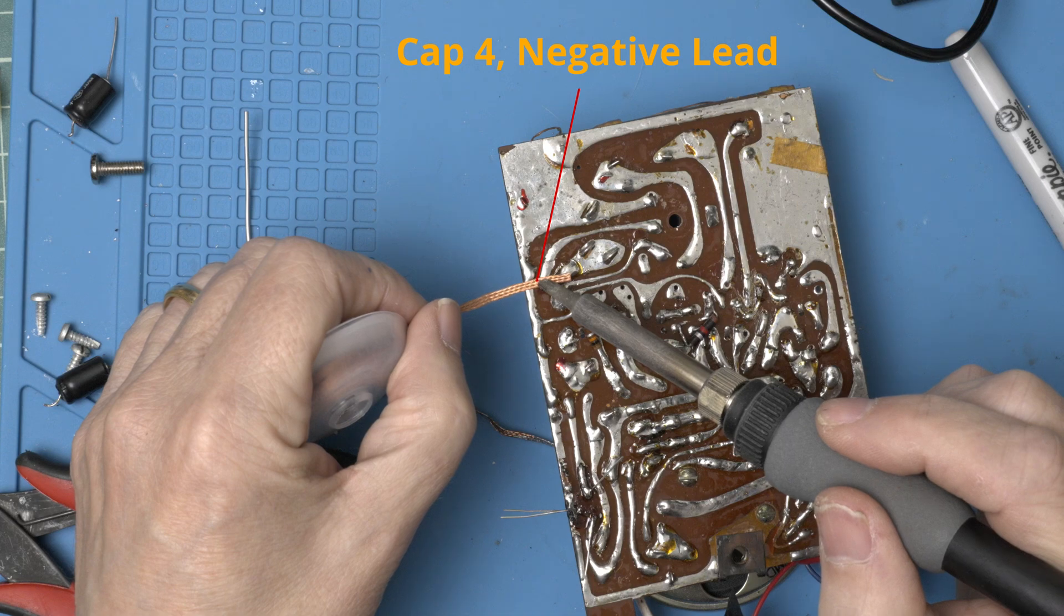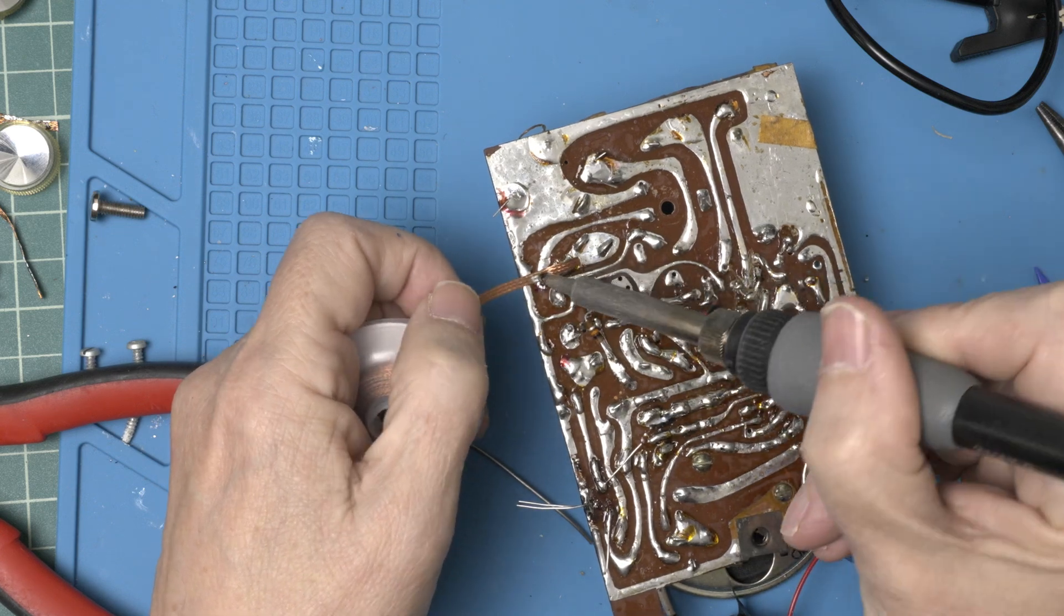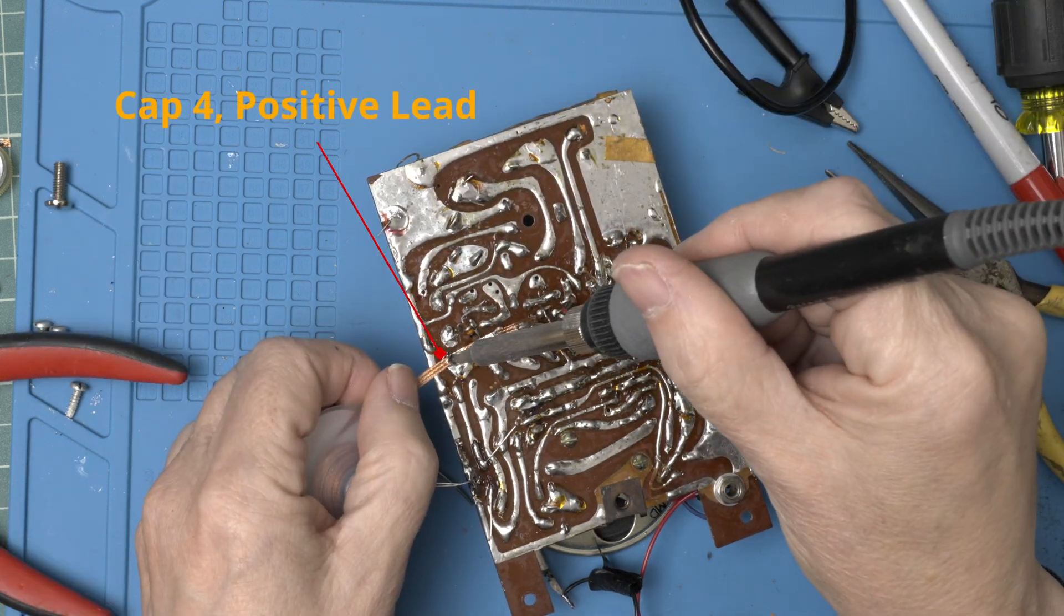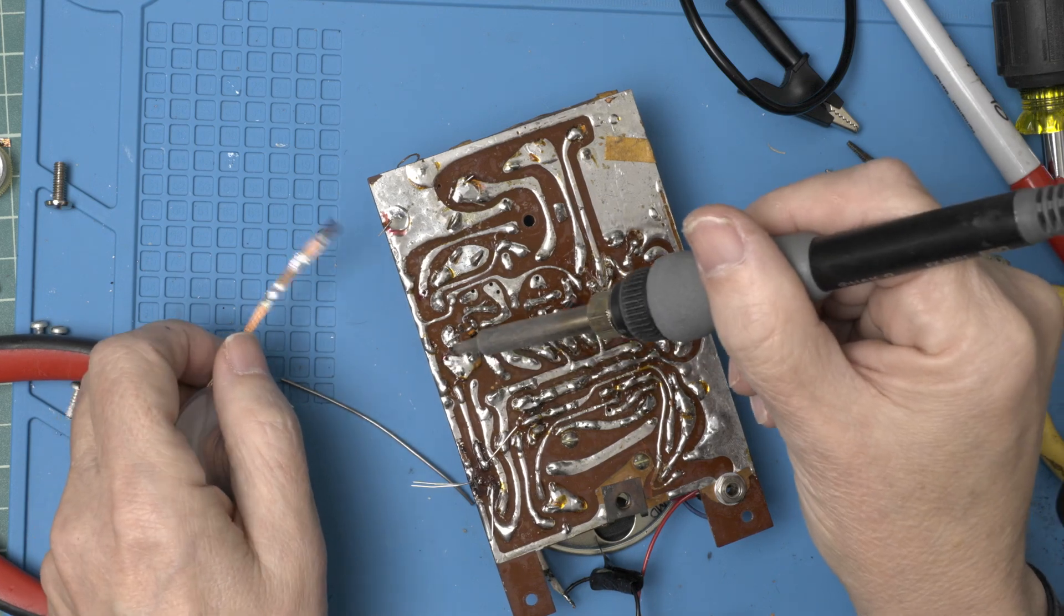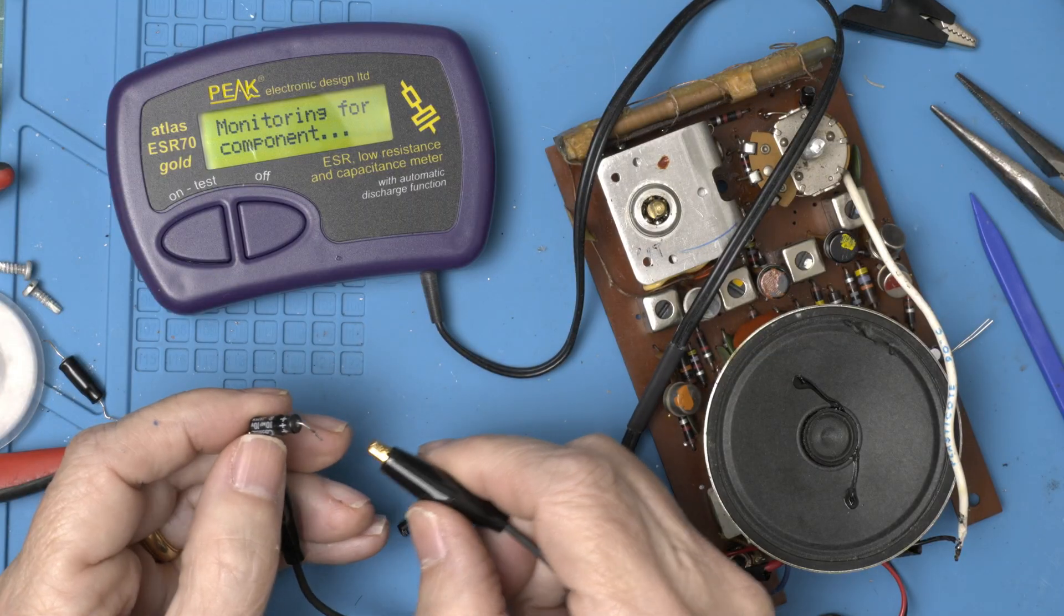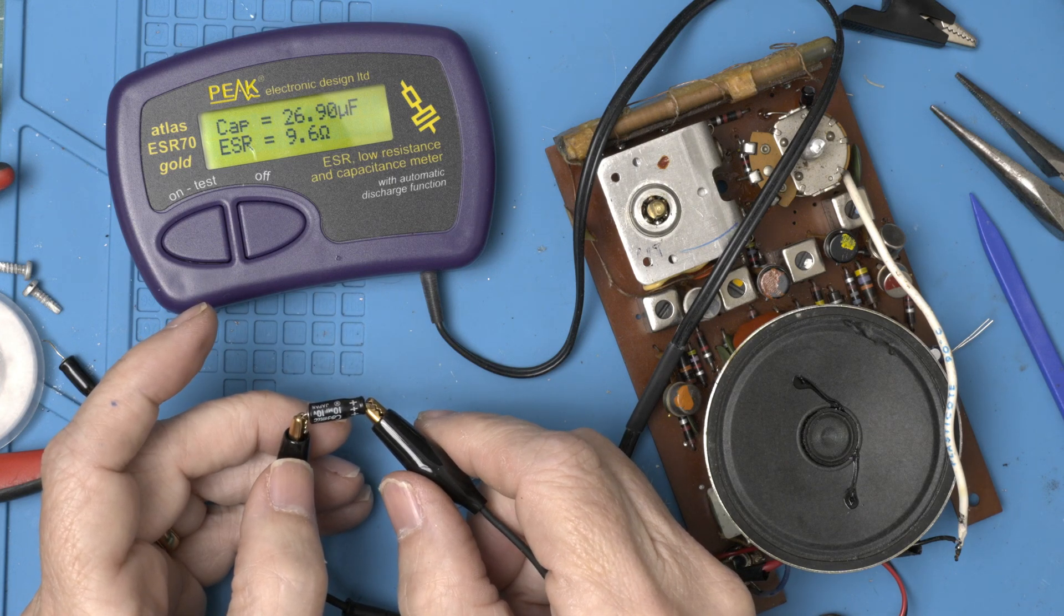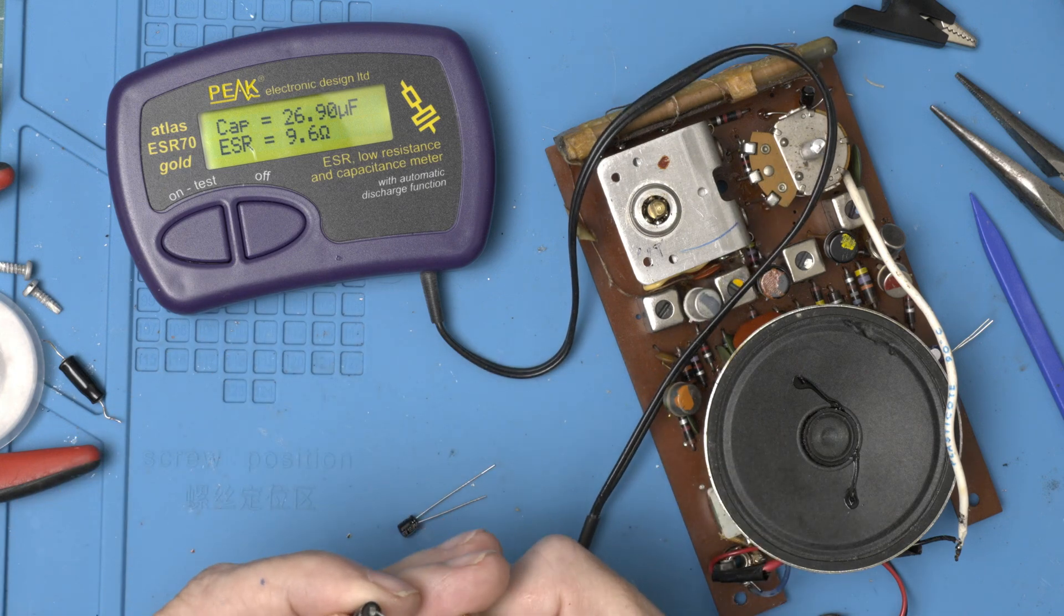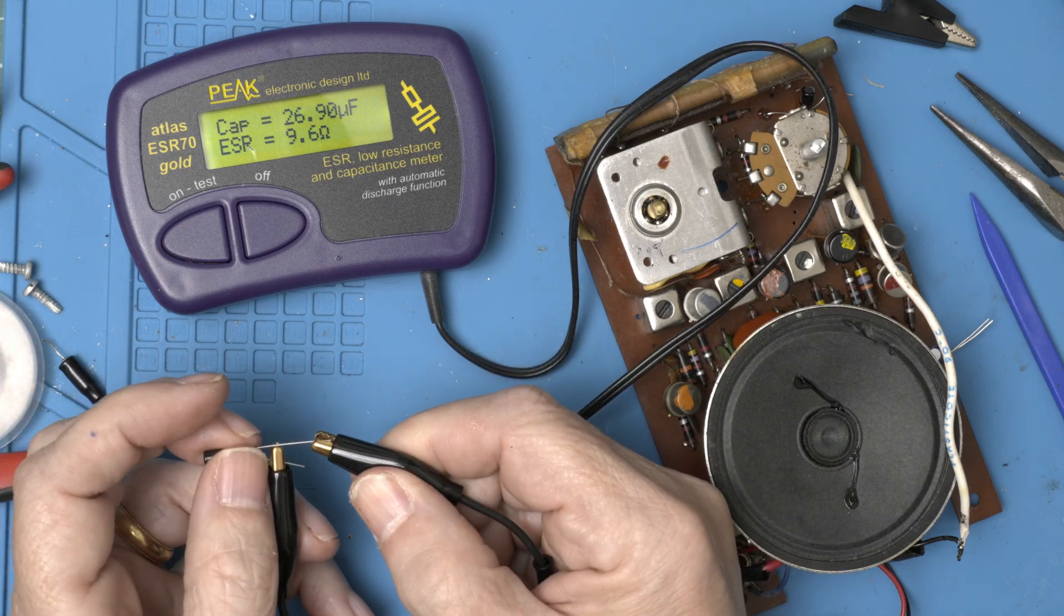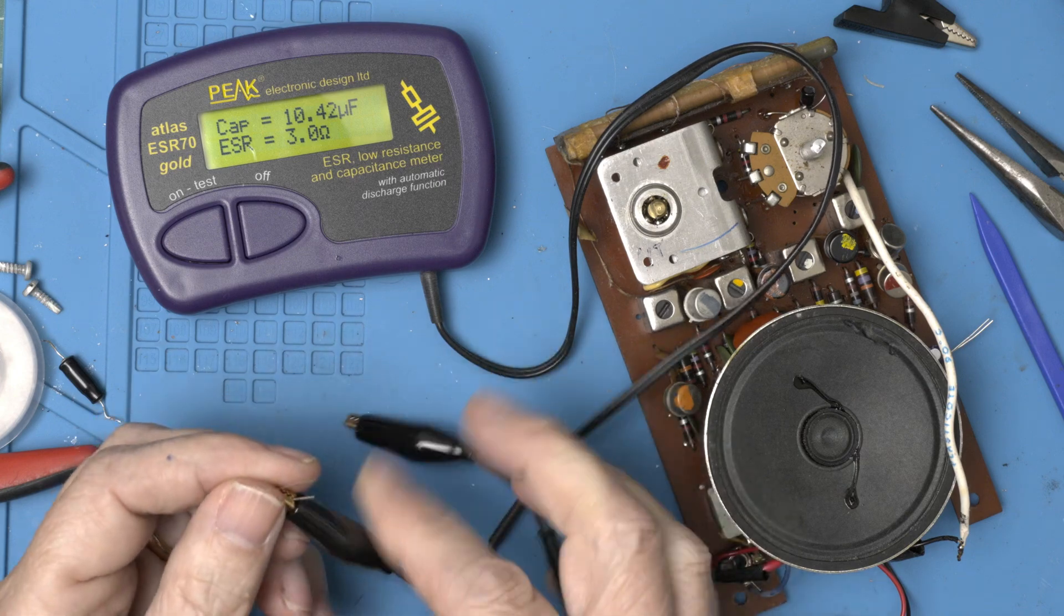That's the third set. It's our second set. Well, let's compare the one we just took out. The 10 is 27 with an ESR of 9.6. Terrible, and the new one we're putting in, 10.42 with an ESR of 3, so much better.